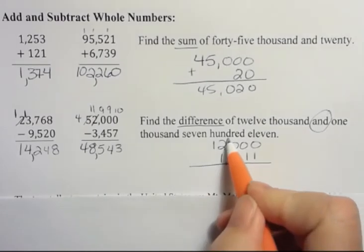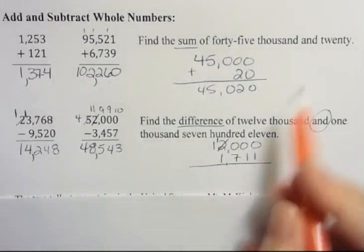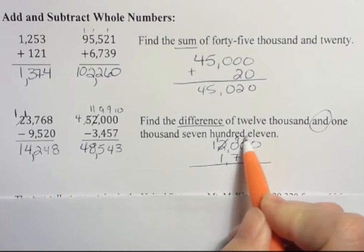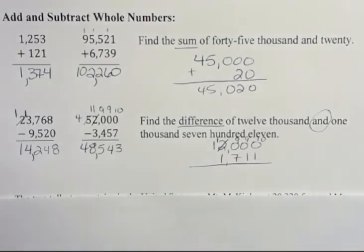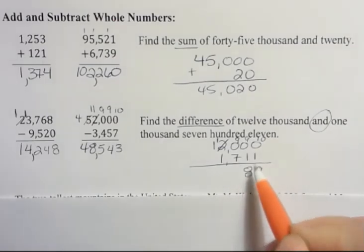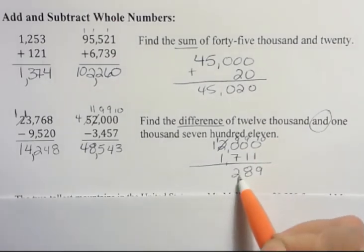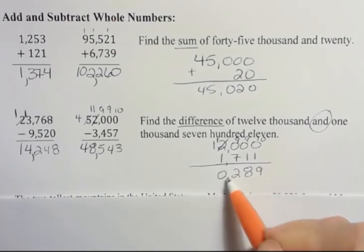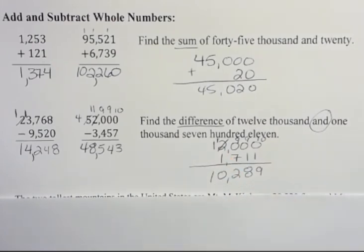So now I'm going to borrow again from that two. I'm going to make that one. I could have put that down a little bit. Everything becomes 9, except the last value becomes 10. 10 minus 1 is 9. 9 minus 1 is 8. 9 minus 7 is 2. 1 minus 1 is 0. And then I have 1. That gives me 10,289.